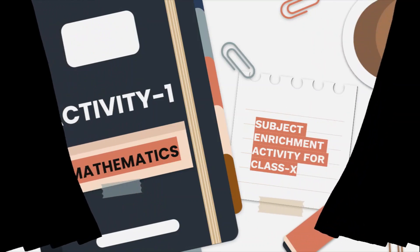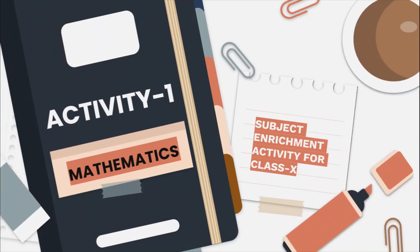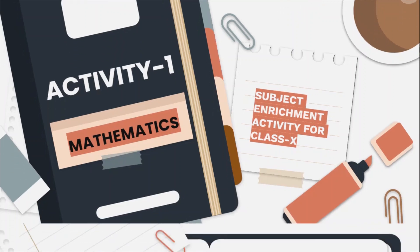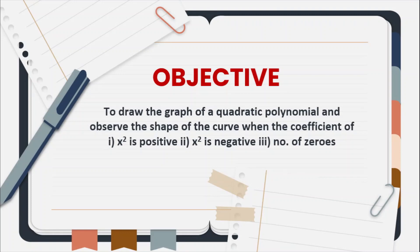Hello students. In this video, we will discuss the first subject enrichment activity for class 10th. The objective of this activity is to draw the graph of a quadratic polynomial and observe the shape of the curve when: case 1, the coefficient of x square is positive; case 2, when the coefficient of x square is negative; and case 3, the number of zeros of the quadratic polynomial.